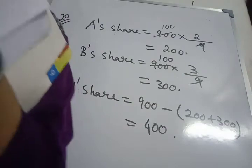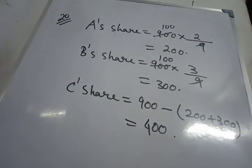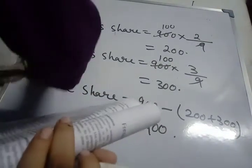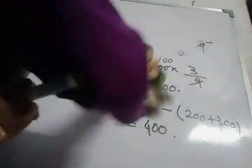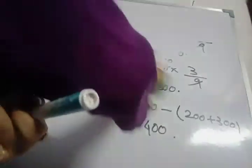Next sum. Sum number 21. The ratio of 2 numbers is 7 is to 5. If the difference be 30 then find the numbers.